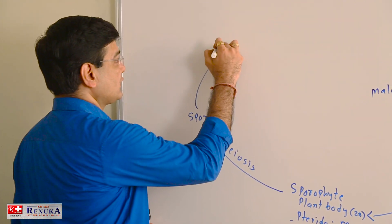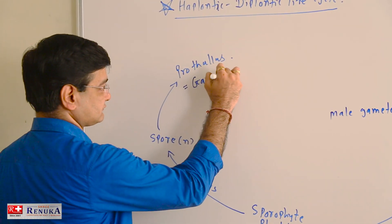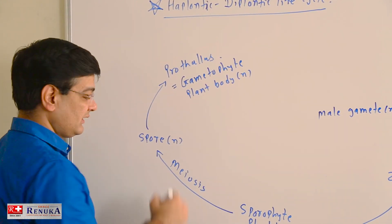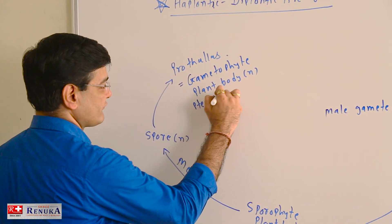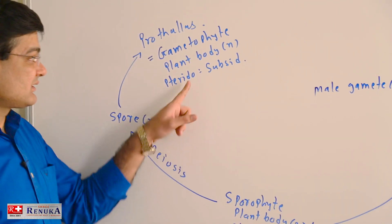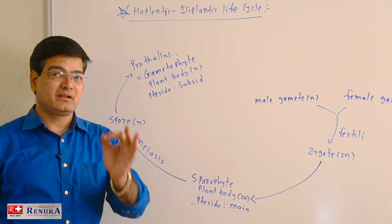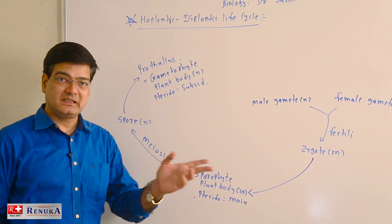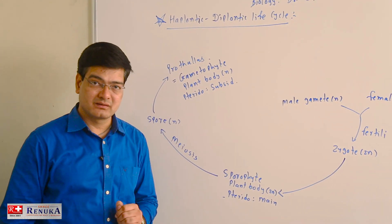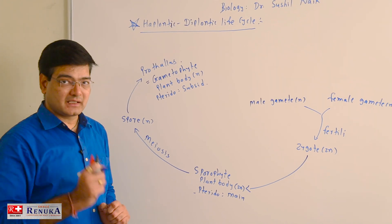These haploid spores are transformed into the prothallus, which is itself called the gametophyte plant body and is haploid. In pteridophyta, the prothallus is a subsidiary plant body — the main plant body is the sporophyte, and the subsidiary is the gametophyte in the form of prothallus. Importantly, both plant bodies have their independent existence; they do not depend on each other. The prothallus has the ability to photosynthesize and is therefore independent.